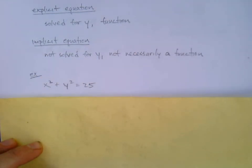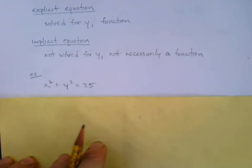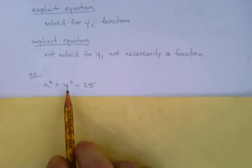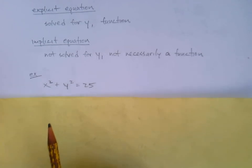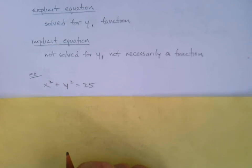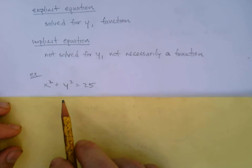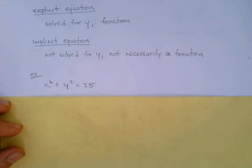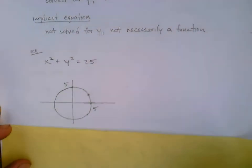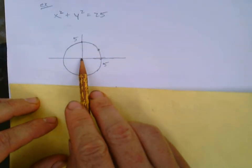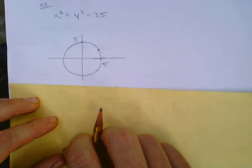That equation is not solved for y, and it turns out it's not a function. Do you know what the graph of x squared plus y squared equals 25 looks like? This came up in the geometry review. It's a circle — the center is at the origin and the radius is 5.